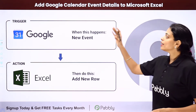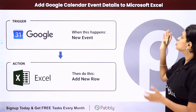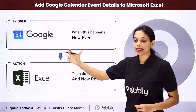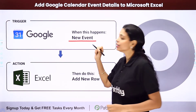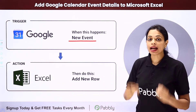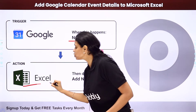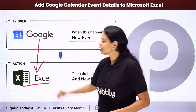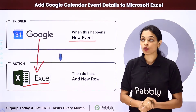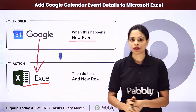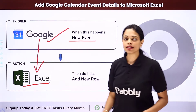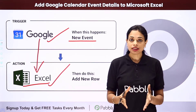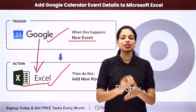In this video, we are going to see how to add Google Calendar event details to Microsoft Excel. Let's say you are using Google Calendar to manage your dates, and every time a new event is added to it, you want this information to be added as a new row in your Microsoft Excel spreadsheet. By integrating these two applications using Pably Connect software, this entire process will get automated. Let me take you to my screen.